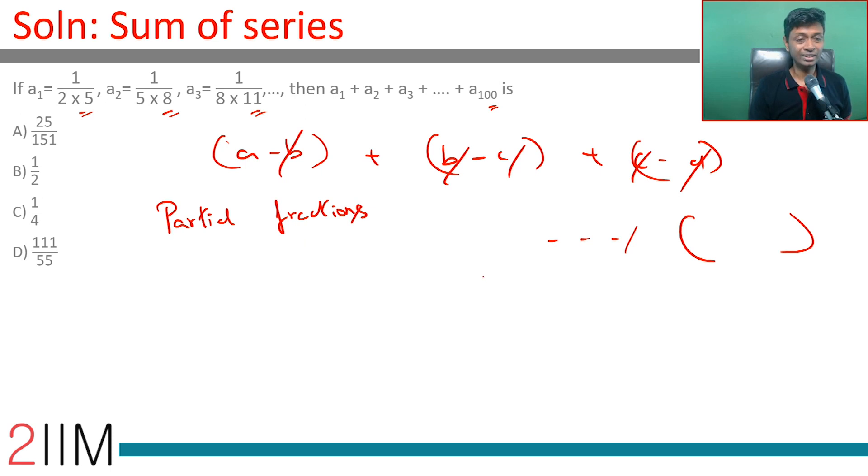If you can sense that, that is brilliant. First up, we need to find the 100th term. This is 1 by 2 into 5, 5 into 8, 8 into 11, going plus 3, plus 3, plus 3. So A1 is 2 into 5, A2 is 5 into 8.